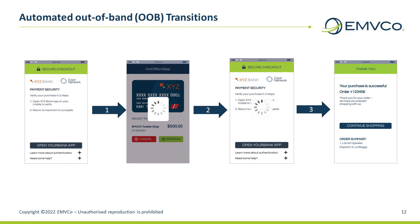Another key update in EMVCo 3DS version 2.3 is the addition of automated out-of-band (OOB) transactions. Automated OOB transactions help consumers to switch seamlessly between a merchant application and an authentication application. This provides a simpler, easier-to-use way for consumers to confirm a transaction when an authentication method through a separate channel is required. Typically, OOB authentication has been a manual process involving multiple steps — for example, leaving the merchant app to log in separately to the banking app, then reviewing and confirming the transaction, then switching back to the merchant app. The new enhancements in version 2.3 automate this process, simplifying and speeding up the checkout for consumers.